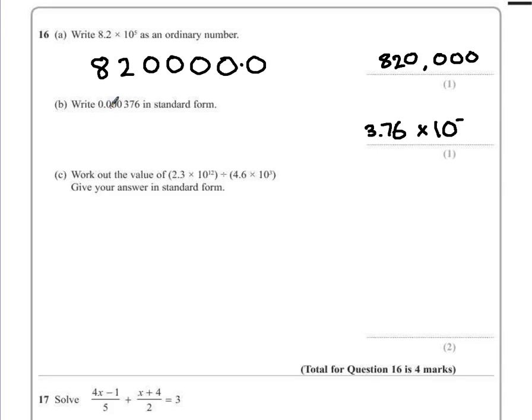So the decimal point has gone 1, 2, 3, 4 places so that would be negative 4.